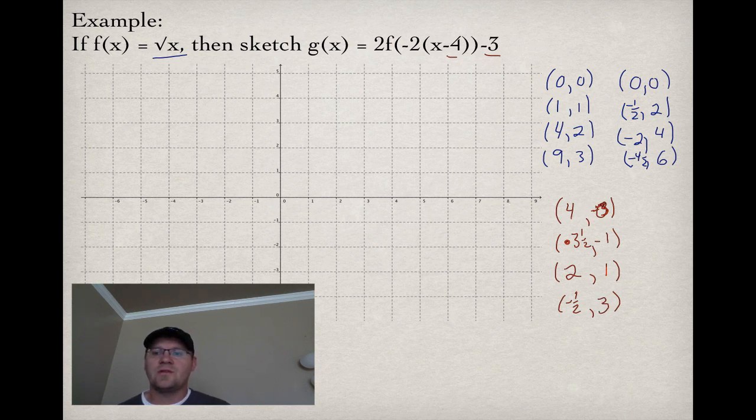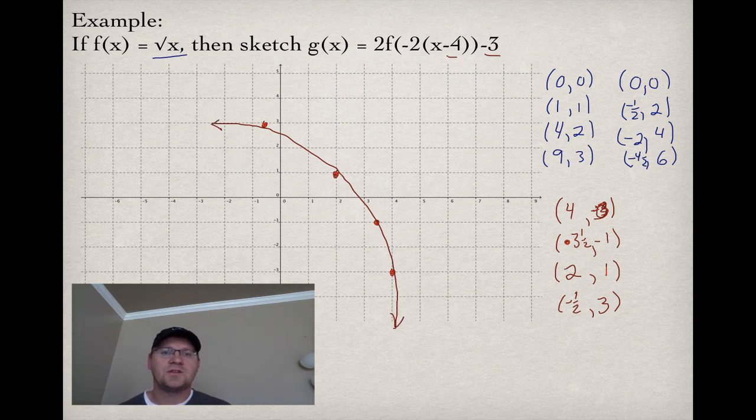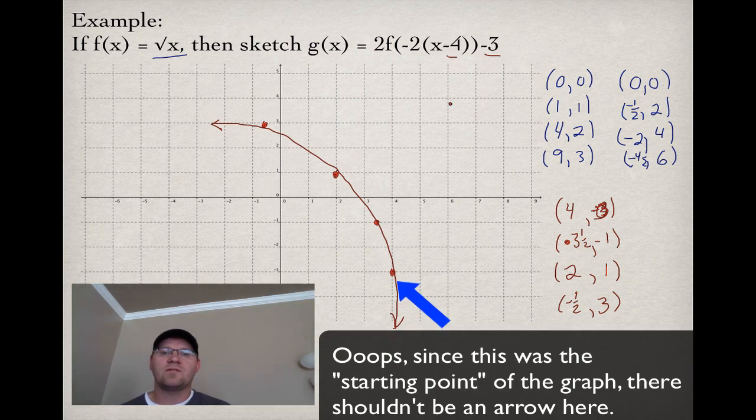So in plotting these points, we've got (4, negative 3), which is right down here. We've got (3 and a half, negative 1). We've got (2, 1). And we've got (negative half, 3). So we can just see how this whole function, which was root x, has now changed into 2f(negative 2 times (x minus 4)) minus 3.